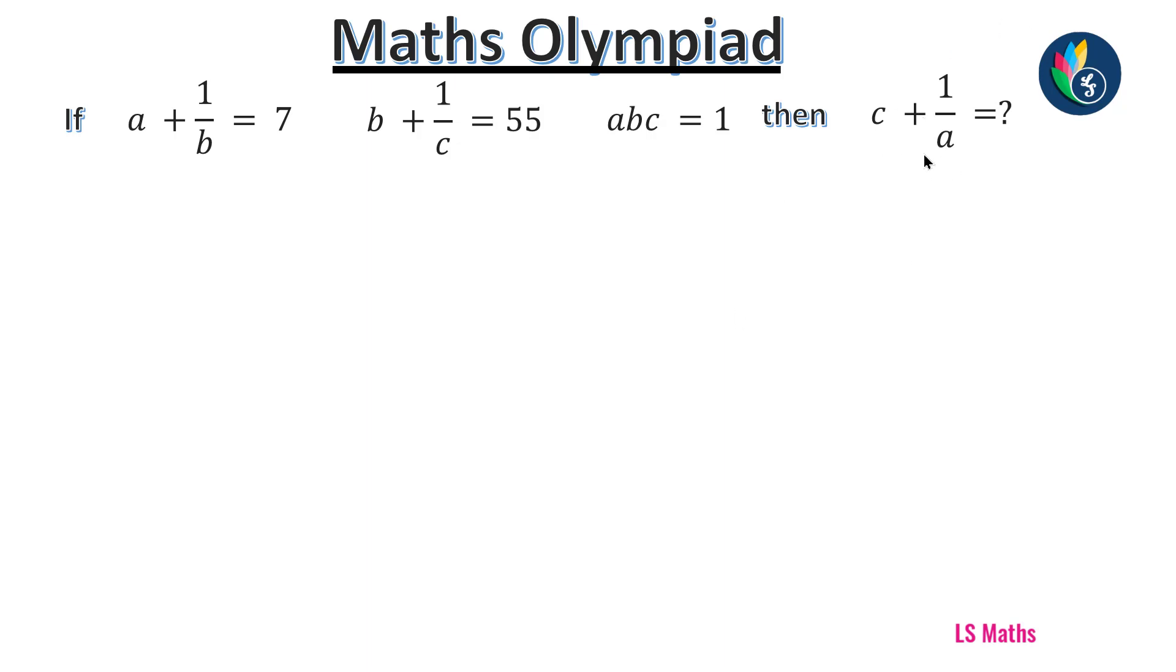First, you see the question. In this question, we are asked C plus 1 by A. That is, A and C are available. So first step, we are writing both A and C in terms of B. That is the first step. Write A and C in terms of B.